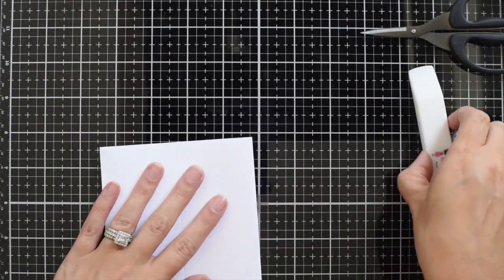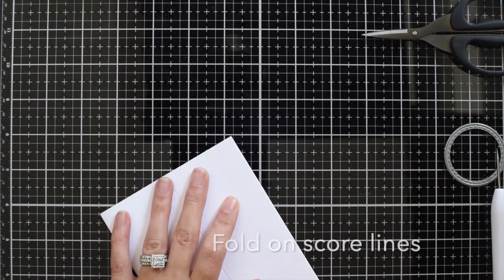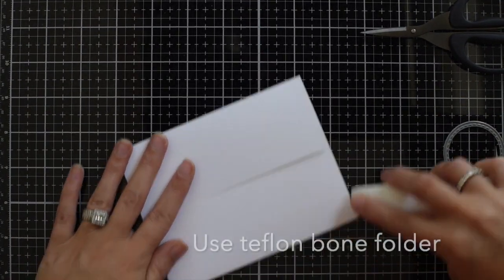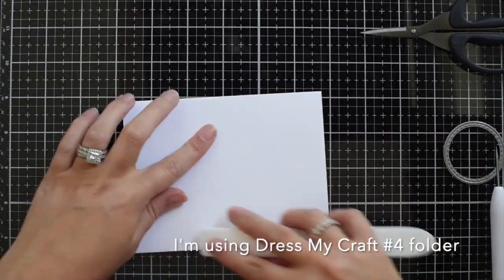And we're going to go ahead and fold it on our score lines and use a Teflon bone folder. I'm using the number four from Dress My Craft.